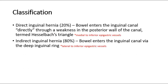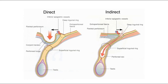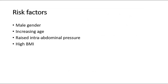Inguinal hernias can be classified into direct and indirect types. For direct inguinal hernia, the bowel enters the inguinal canal directly through a weakness in the posterior wall of the canal, termed Hesselbach's triangle. For indirect inguinal hernia, the bowel enters the inguinal canal via the deep inguinal ring. Direct inguinal hernia lies medial to the inferior epigastric vessels, whereas indirect inguinal hernia lies lateral to the vessels.